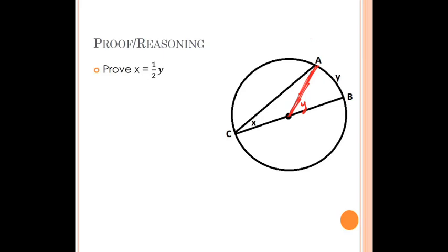By constructing this diagram, we've created a triangle. What kind of triangle is it? It's an isosceles triangle, because that side is a radius and that side is a radius. Now think about what you know about isosceles triangles — the base angles theorem tells us that if you have an isosceles triangle, the base angles are congruent. So if one base angle is X, the other is also X.